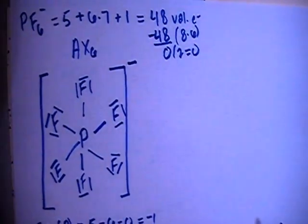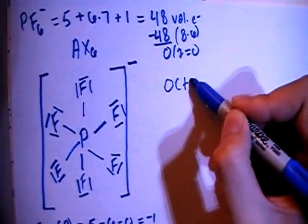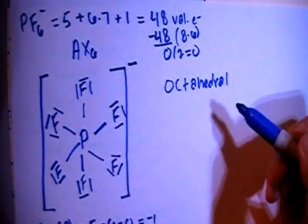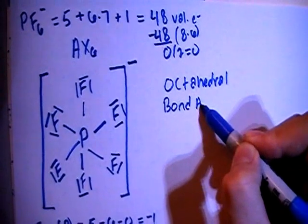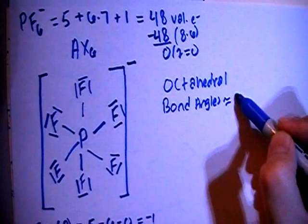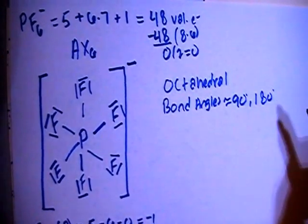Let's talk about the shape real quick. AX6 means that this is going to be in octahedral shape. And when you have the octahedral shape, the bond angles are going to be approximately equal to 90 degrees and 180 degrees.